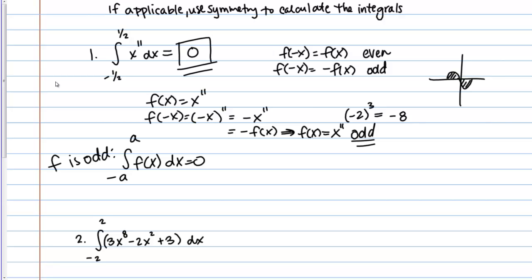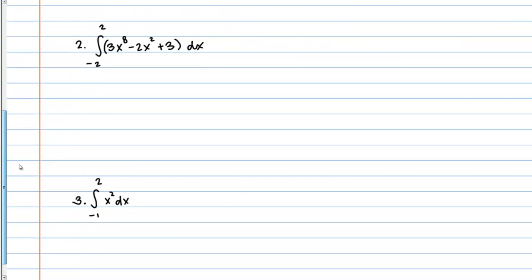Okay, so, let's look at another example. Same deal here. We have symmetric bounds, negative 2 to 2. So, we'd like to see if our function here is even or odd. And that will tell us if we can use any of these simplifying rules.